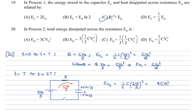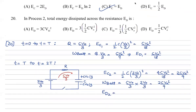The energy stored in the capacitor becomes 4CV_not squared by 18, which equals CV_not squared by 9. The work done by the battery equals charge delivered times the EMF of the battery, giving 2CV_not squared by 9. In the second step, the energy dissipation equals work done by the battery minus the increase in energy of the capacitor, giving 2CV_not squared by 9.